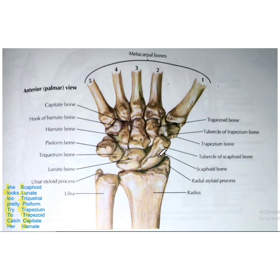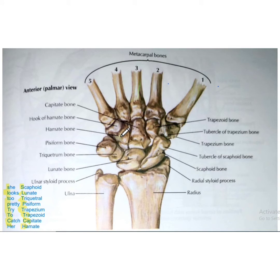These eight carpal bones are arranged in two rows — a proximal row and a distal row — each consisting of four carpal bones, numbered from lateral to medial side. The proximal row consists of scaphoid, lunate, triquetral, and pisiform bones, whereas the distal row consists of trapezium, trapezoid, capitate, and hamate. There is a mnemonic to remember these eight bones: 'She Looks Too Pretty, Try To Catch Her.'